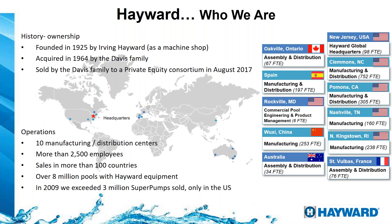We're a company that is pretty much international. It was founded in 1925 by Mr. Irvine Hayward, and then it was acquired by the Davis family in 1964. The company was sold to a private equity consortium in August 2017. We have manufacturing companies all over the world — in the United States, China, France, and Australia. We are a pretty big company.